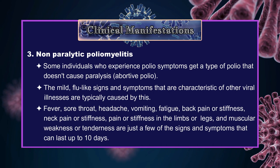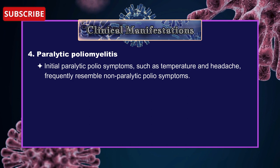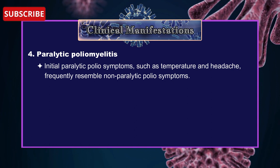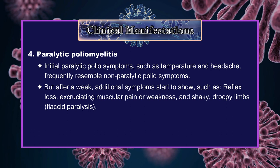4. Paralytic poliomyelitis: Initial paralytic polio symptoms such as fever and headache frequently resemble non-paralytic polio symptoms. But after some weeks, additional symptoms start to show, such as reflex loss, excruciating muscular pain or weakness, and shaky and droopy limbs — flaccid paralysis.